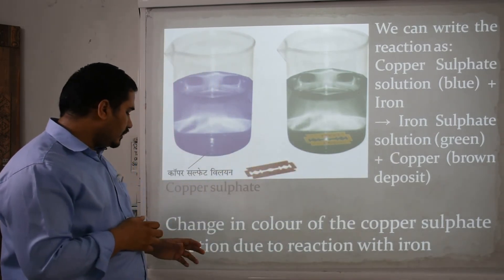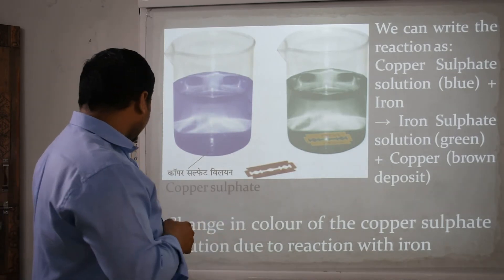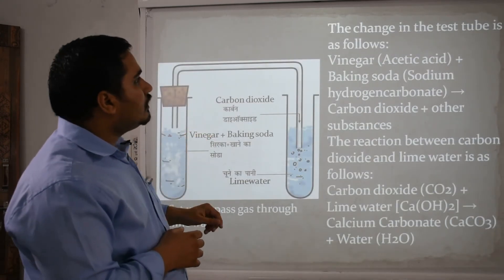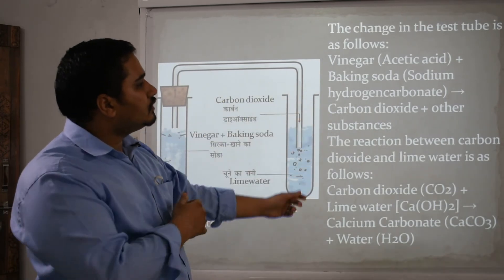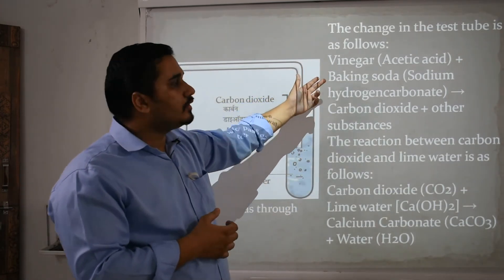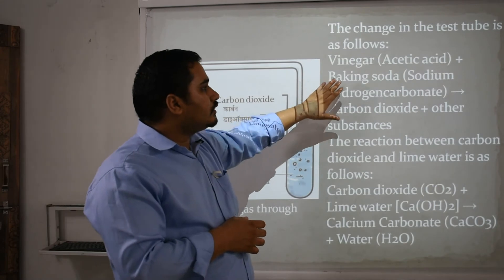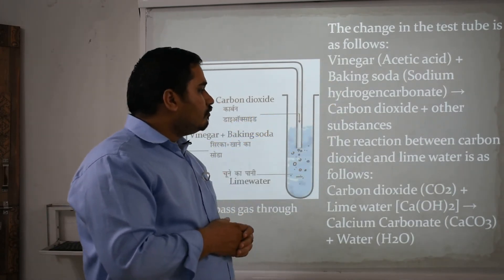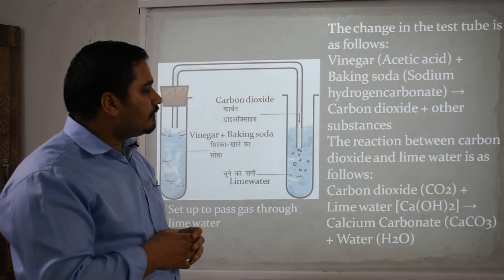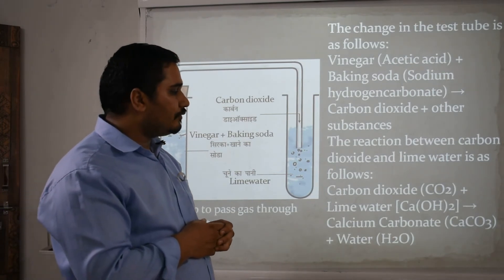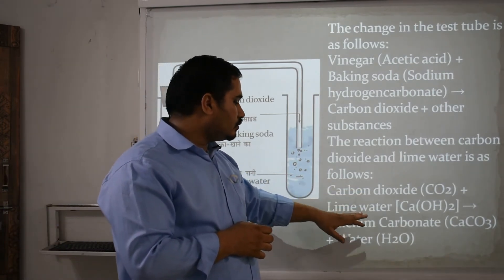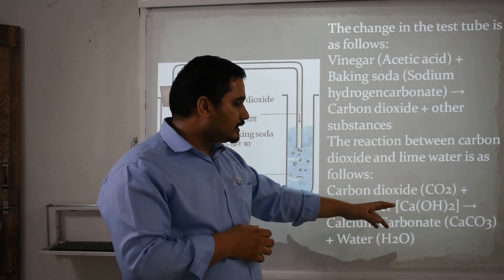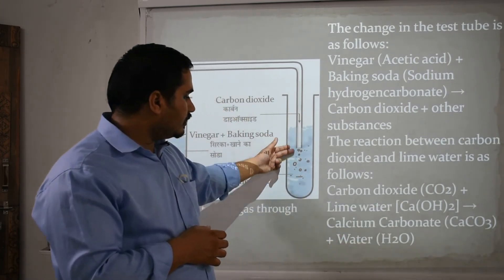There is a change in colour of the copper sulphate solution due to reaction with iron. Another reaction involves vinegar — acetic acid, which is available in our home — and baking soda, also available at home, producing carbon dioxide and other substances. The reaction between carbon dioxide and lime water is: Carbon dioxide (CO2) plus lime water Ca(OH)2 gives calcium carbonate CaCO3 and water.